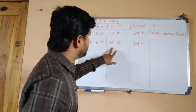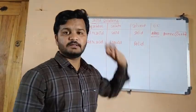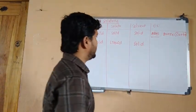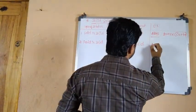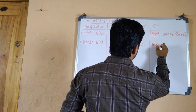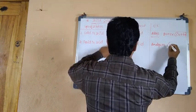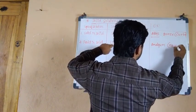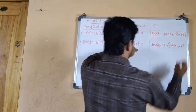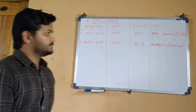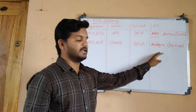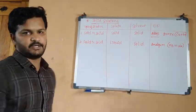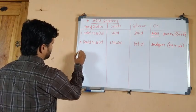Liquid solute in solid — the example here is amalgam, meaning mercury (Hg) dissolved in sodium. This is called sodium amalgam, and it is the best example for a liquid-in-solid solution.